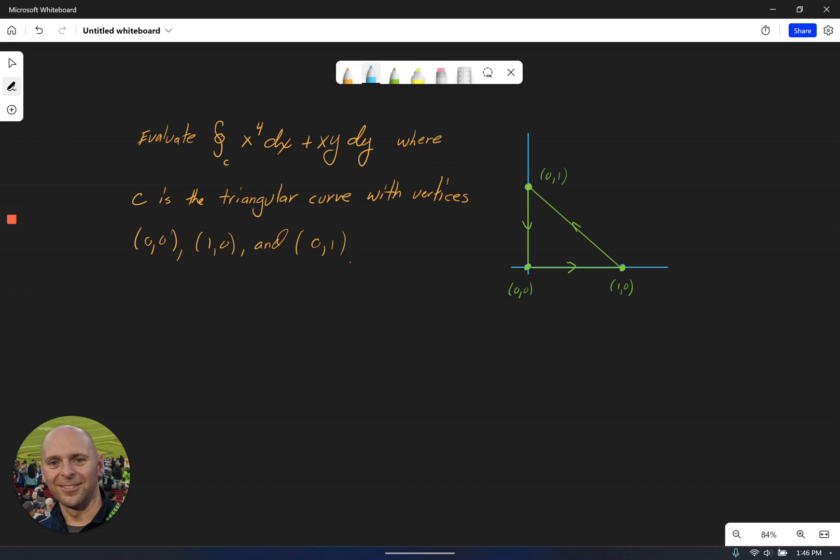So we could certainly compute this directly. That would involve creating three separate parametrizations for each one of these line segments as we went around the curve. So what that would result in is three integrals that we would then ultimately have to add together to figure out the total value of the line integral.